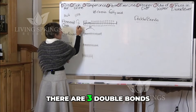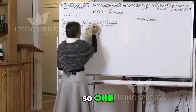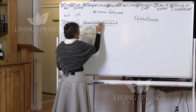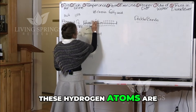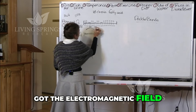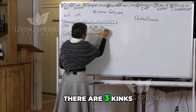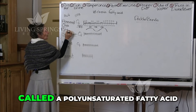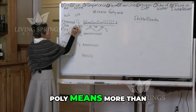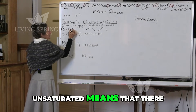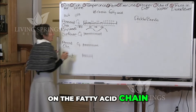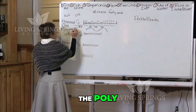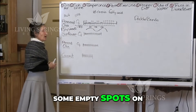In flaxseed and chia seed, there are three double bonds — one, two, three — there's another one; one, two, three — there's another one. These hydrogen atoms are gone, and underneath we've got the electromagnetic field between these two hydrogen atoms, which means now there are three kinks in the chain. That is why this fat is called a polyunsaturated fatty acid. Poly means more than one double bond; unsaturated means that there are some empty spots on the fatty acid chain. We say the word polyunsaturated a lot, but most of us don't know what it means — it's because of the three double bonds and those empty spots on the fatty acid chain.